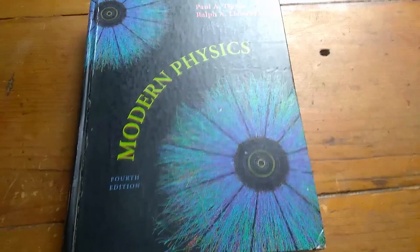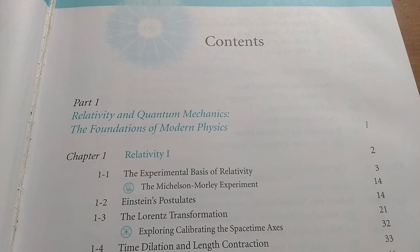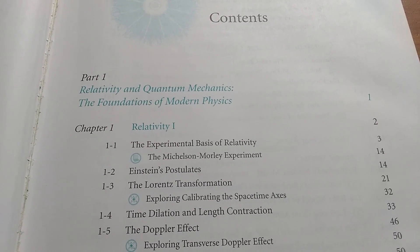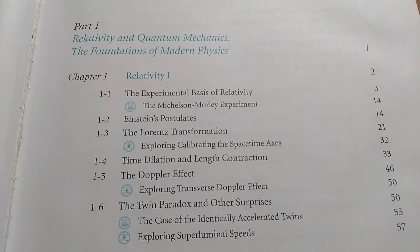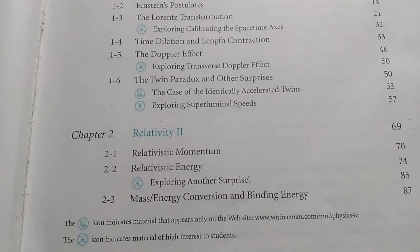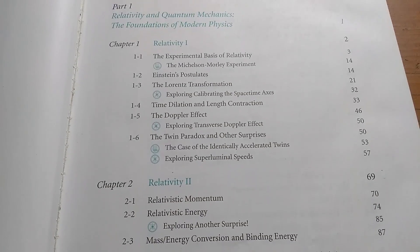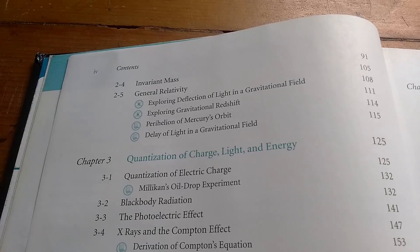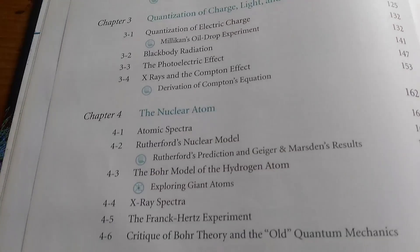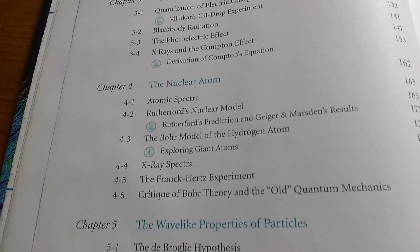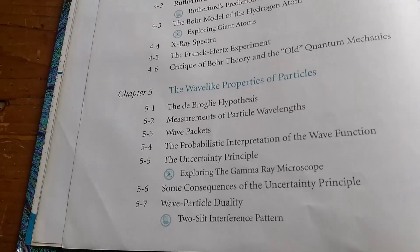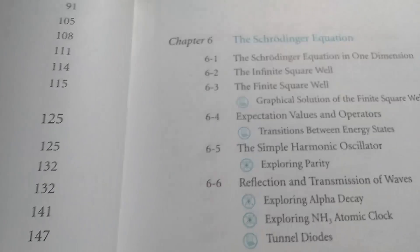Let's take a look inside this book. So this is the Table of Contents, and in Physics 3 we talk about different things: Relativity, and then more relativity, which is really cool — it's very different from the first two physics classes. We have more beautiful physics stuff here: the nuclear atom, all kinds of stuff. I'm going to go through this kind of briefly so we can look deeper inside the book.